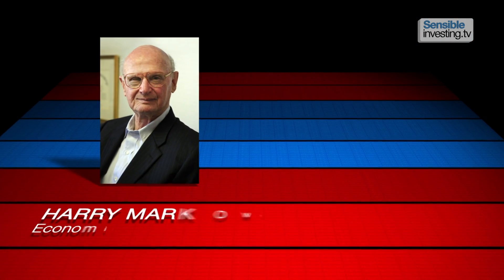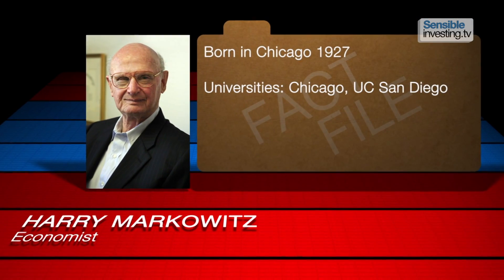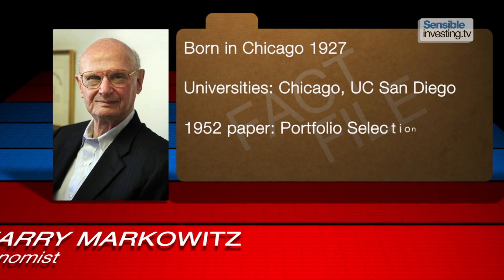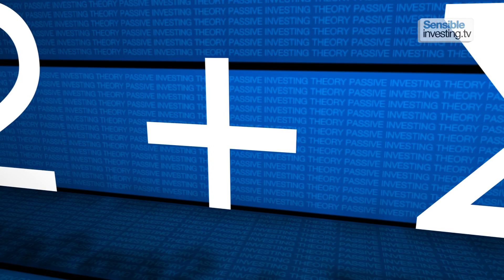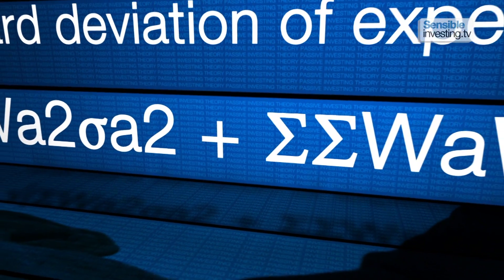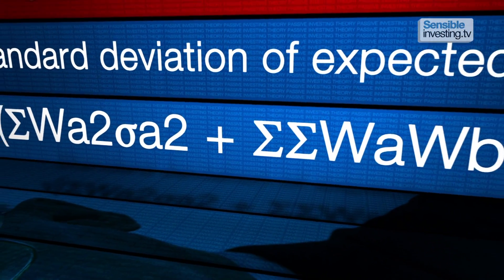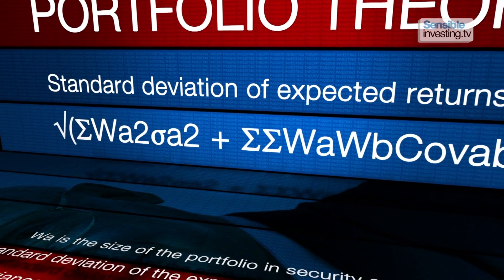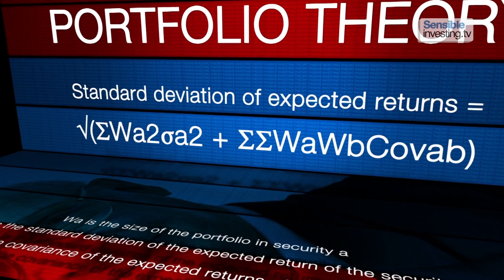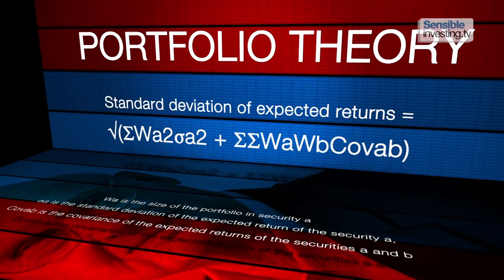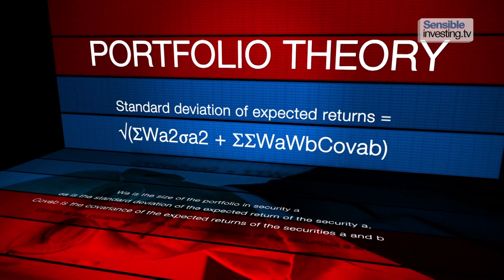But in 1952, Harry Markowitz, an economist at the University of Chicago, developed what he called portfolio theory, which mathematically proved it. The theory, sometimes called modern portfolio theory, also showed that diversification lowers risk even if assets' returns are not negatively correlated — and indeed even if they're positively correlated. This is the formula Markowitz came up with for the standard deviation of expected returns.